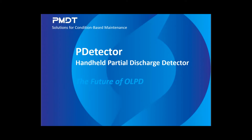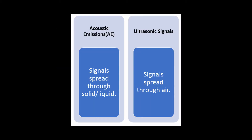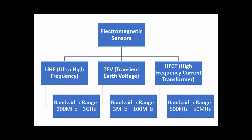The P-Detector is an advanced handheld online partial discharge detector that employs five detection methods: acoustic emissions, ultrasonic, TEV, UHF, and HFCT. The information from multiple sensors gives the P-Detector the versatility to detect all types of PD in various medium and high voltage power equipment.